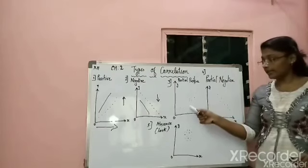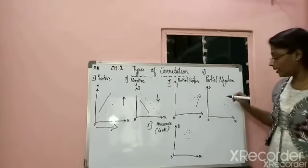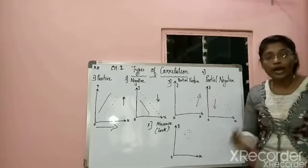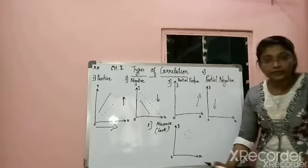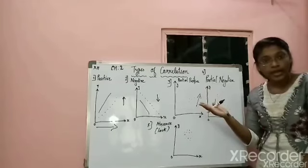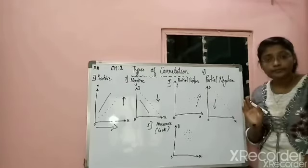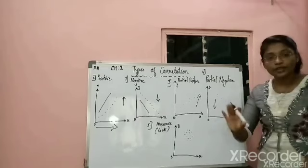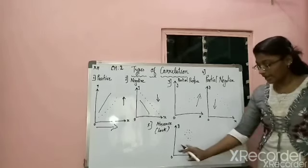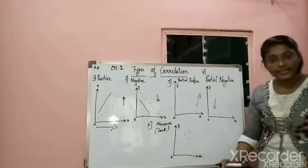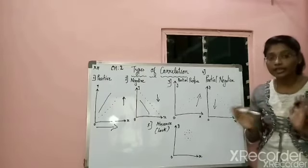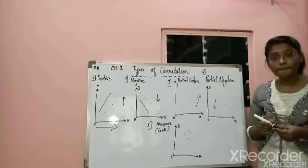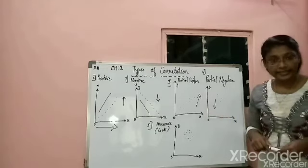Whenever your graph is moving upward but not in a straight line, you have to understand the changes are partially positive. When it is showing downward but not in a straight line, you indicate partial negative correlation. If the points are scattered in the center of the graph without any direction, it indicates there is no correlation between the two variables. Those were the five diagrams of the scatter diagram method.